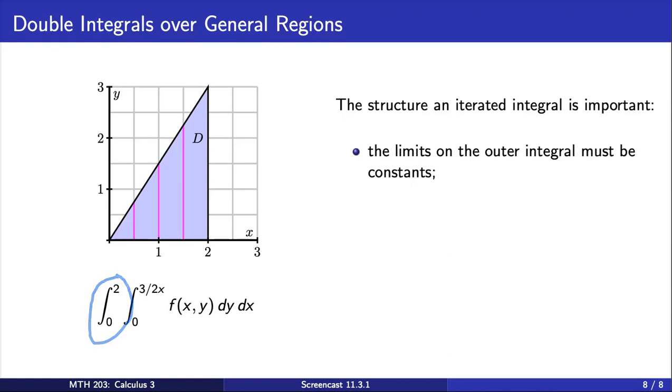The first important thing to note is that the limits on the outer integral must be constant. To see why this is the case, recall the interpretation of a double integral is the signed volume bounded by the function f and the xy plane over the region D. The volume is a real number or it's a constant. If these outer limits here were not constant, then the output of our iterated integral would not be constant, and this would contradict the fact that we should get a volume out of this.